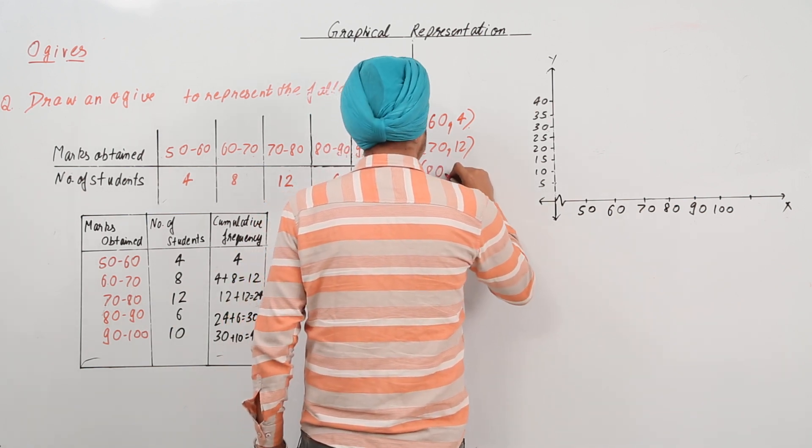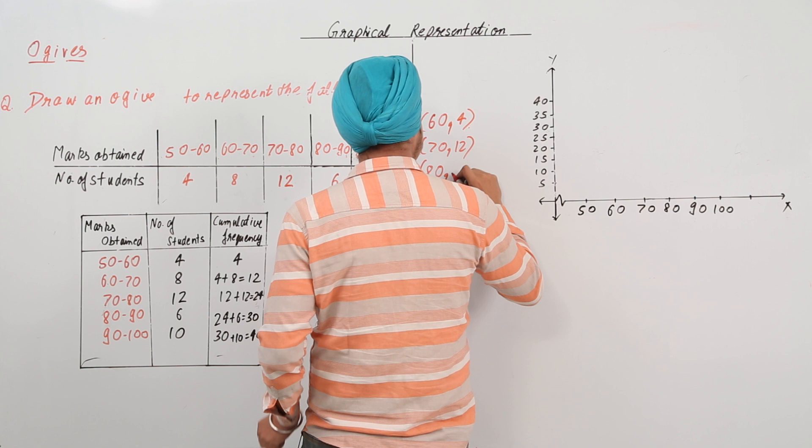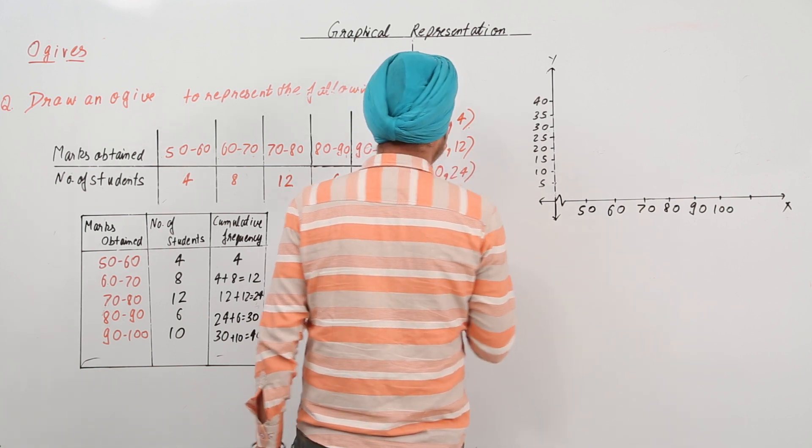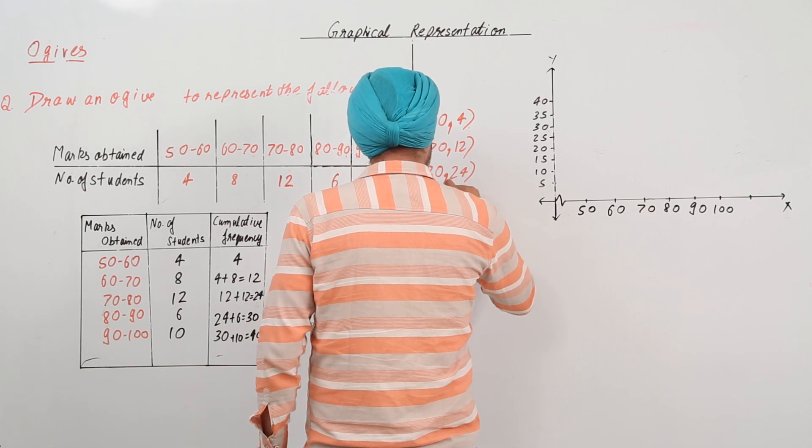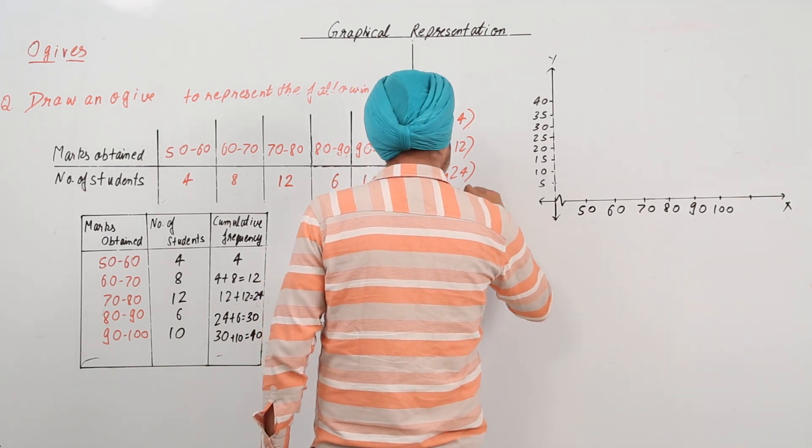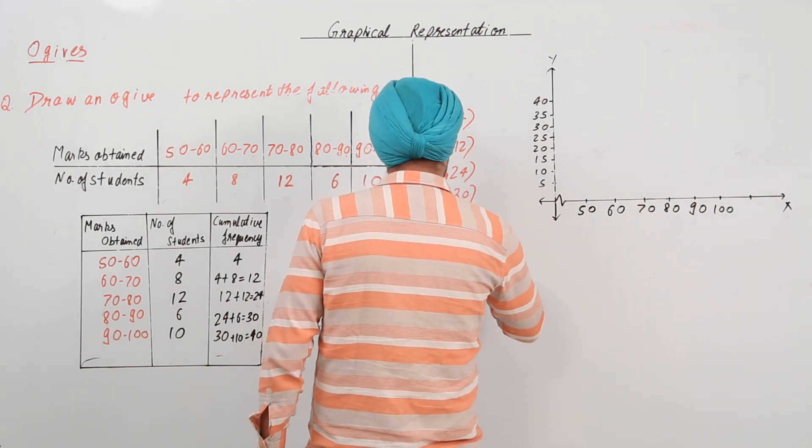Next is 80, what is the cumulative frequency? 24.